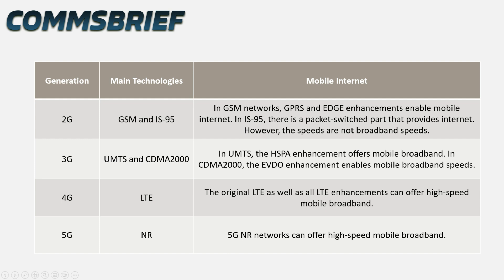Let's have a look at this table now. We have three columns: the first shows the network generation, the second shows the technology, and the third explains how mobile internet is enabled. Starting from 2G, there are two technologies: GSM and IS95. In GSM networks, GPRS and EDGE enhancements enable mobile internet. In IS95, a packet-switched part provides internet. However, the speeds are not broadband speeds for either of these networks.